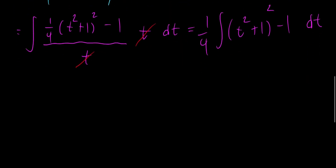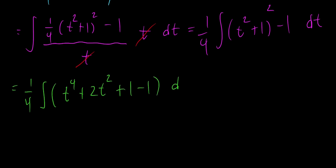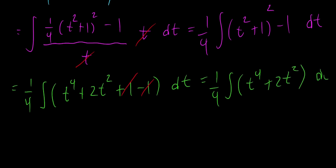Now we expand t squared plus 1 squared. This gives us one fourth times the integral of t to the fourth plus 2t squared plus 1 minus 1 dt. There's some nice cancellation, and we're left with one fourth times the integral of t to the fourth plus 2t squared dt.